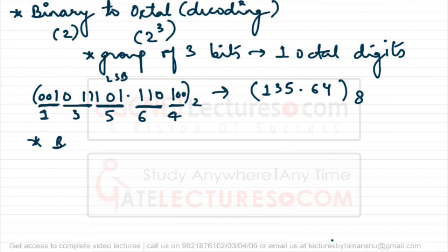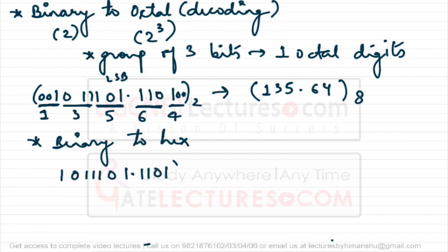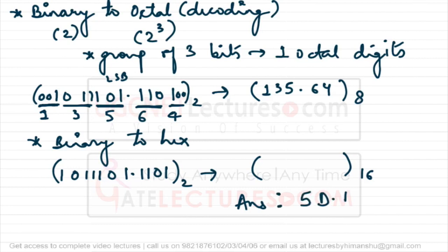Similarly, for binary to hexadecimal conversion, you make groups of 4 bits instead of 3. Each group of 4 bits is represented by one hexadecimal digit. As a practice exercise, try converting the same binary number into hexadecimal. The expected answer is 5D.D in hexadecimal.